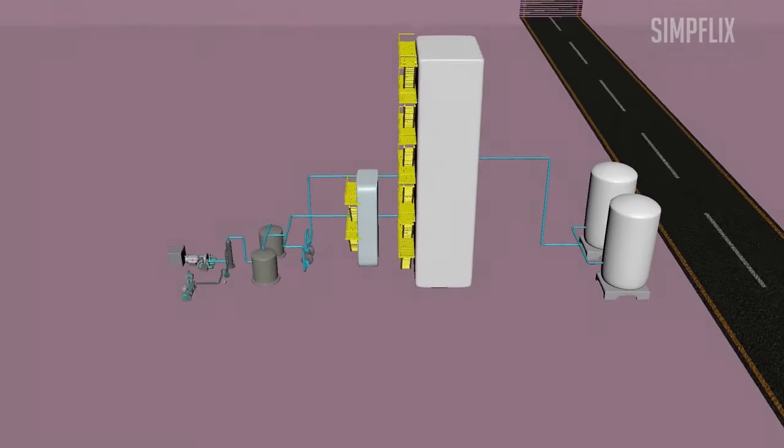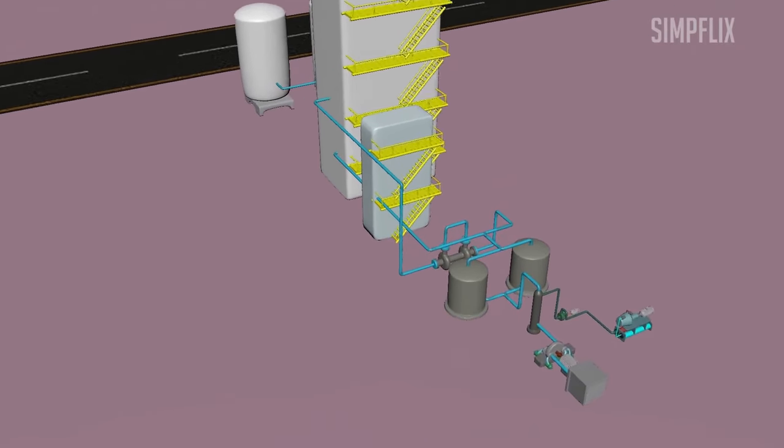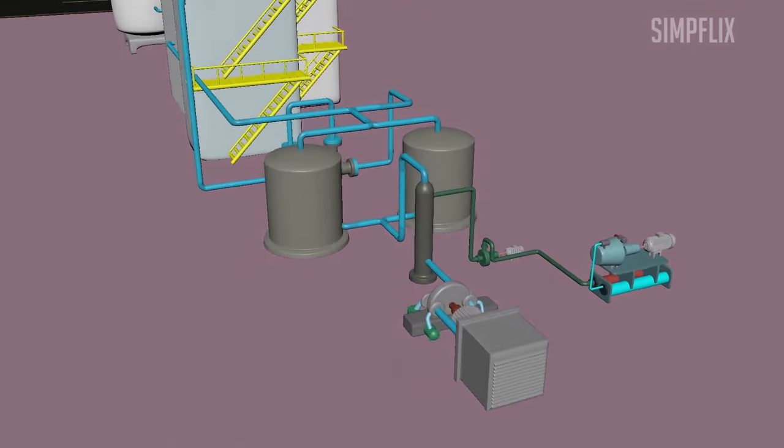Now we will look into the process of achieving low temperature up to minus 196 degrees Celsius to separate oxygen and other components from atmospheric air.